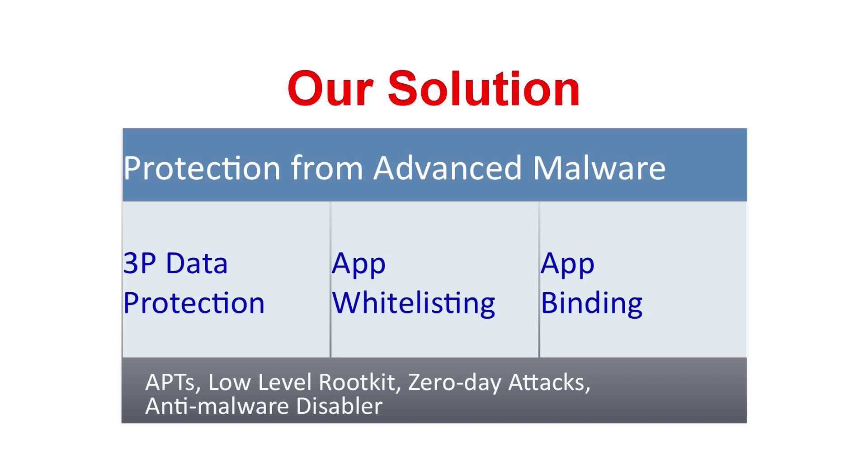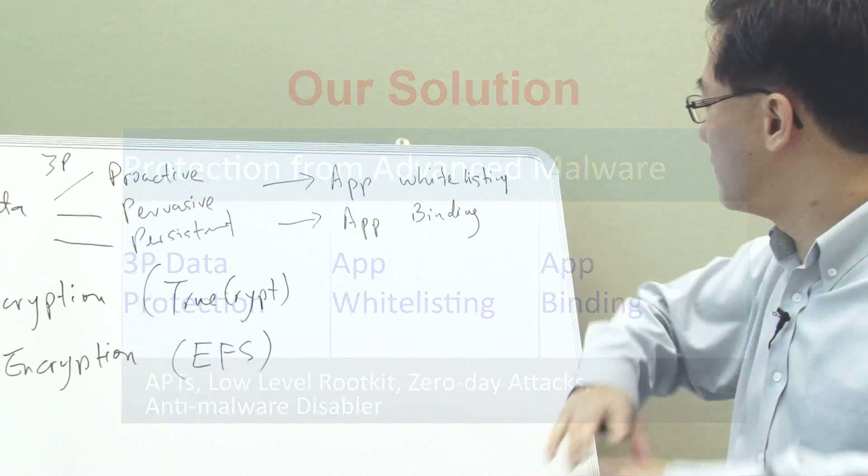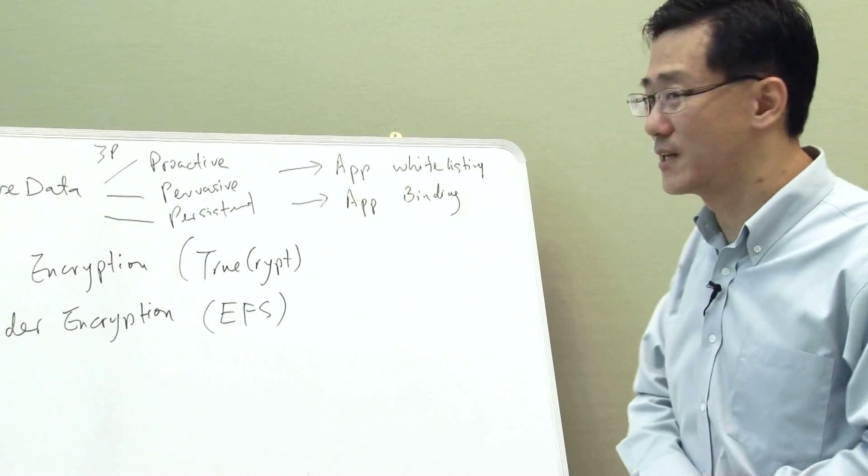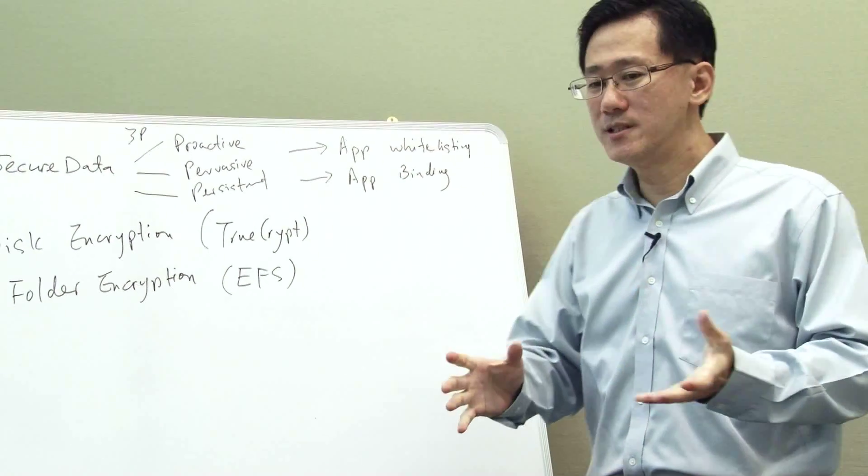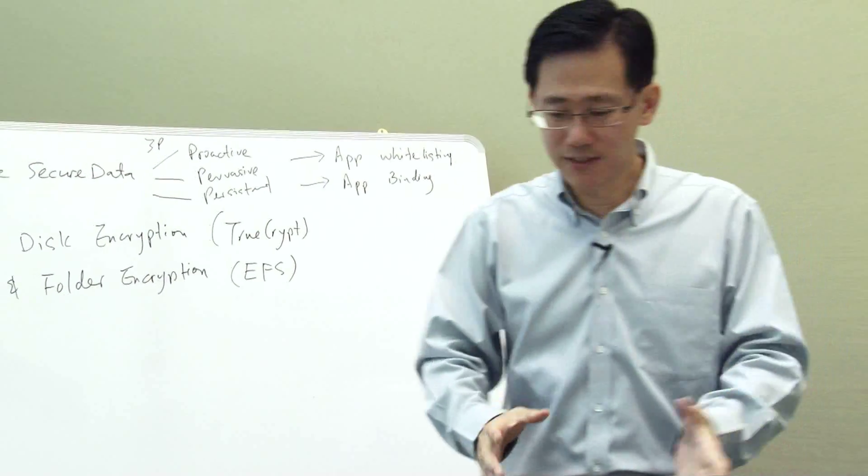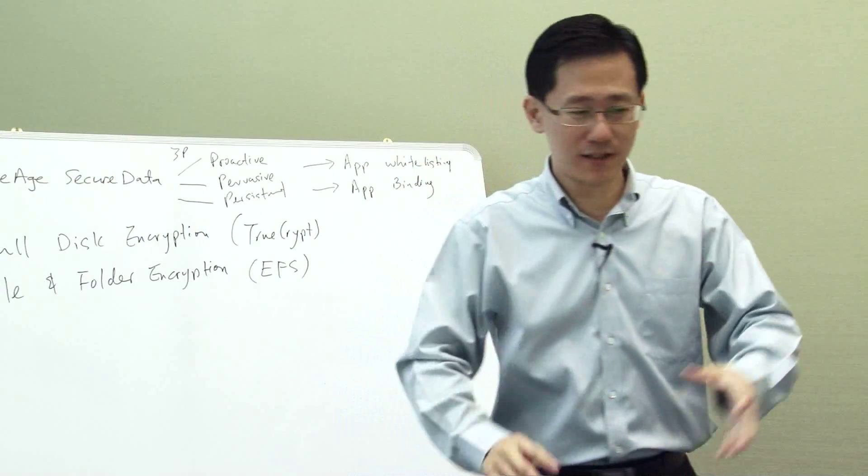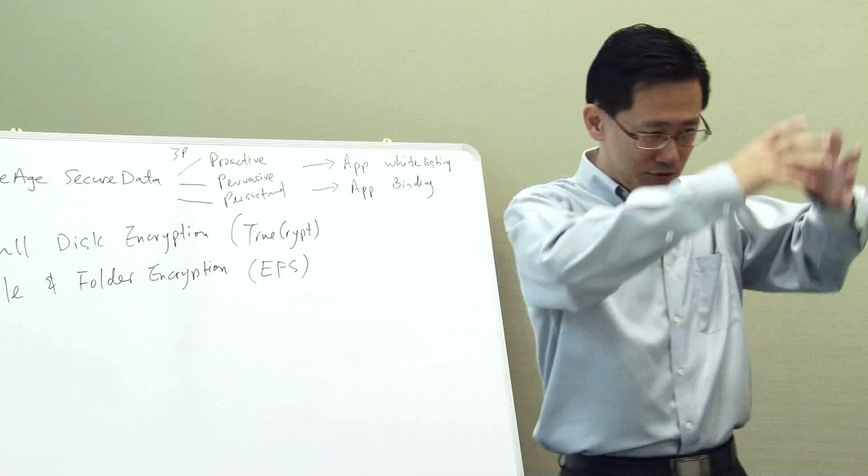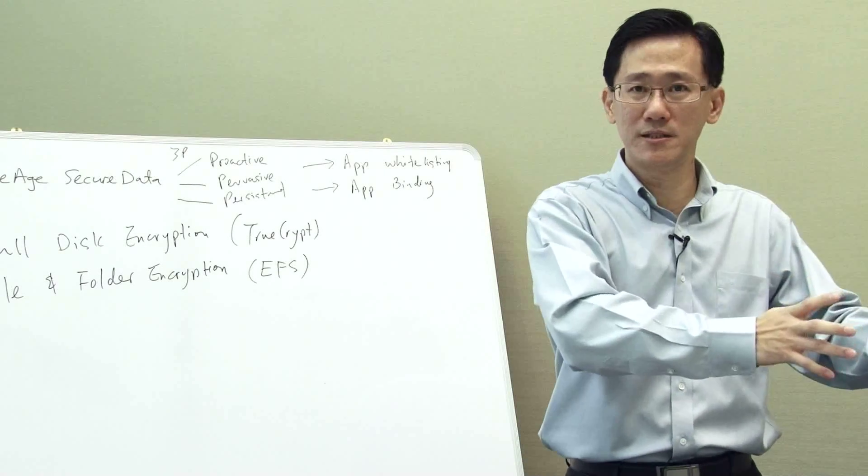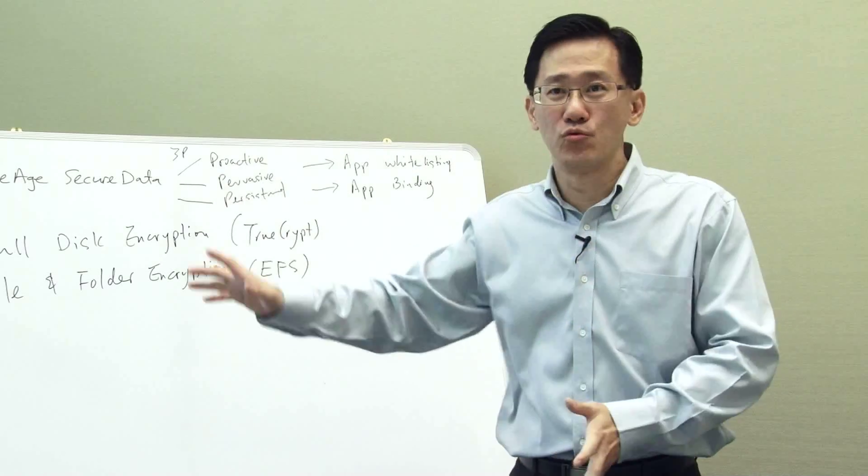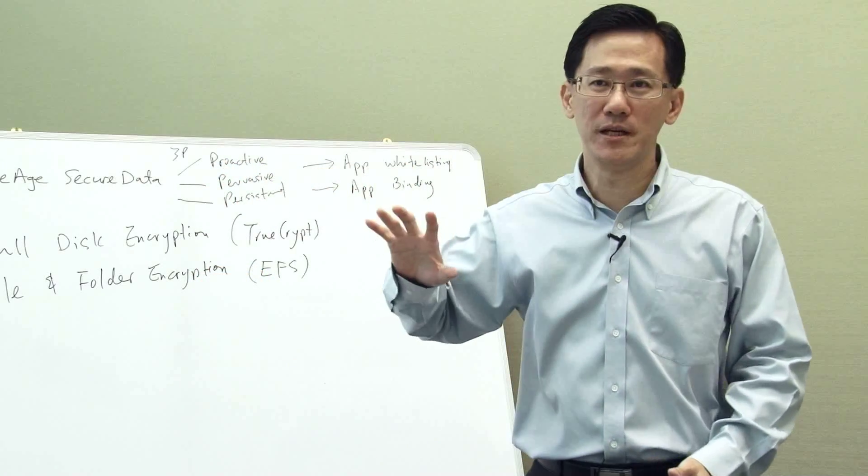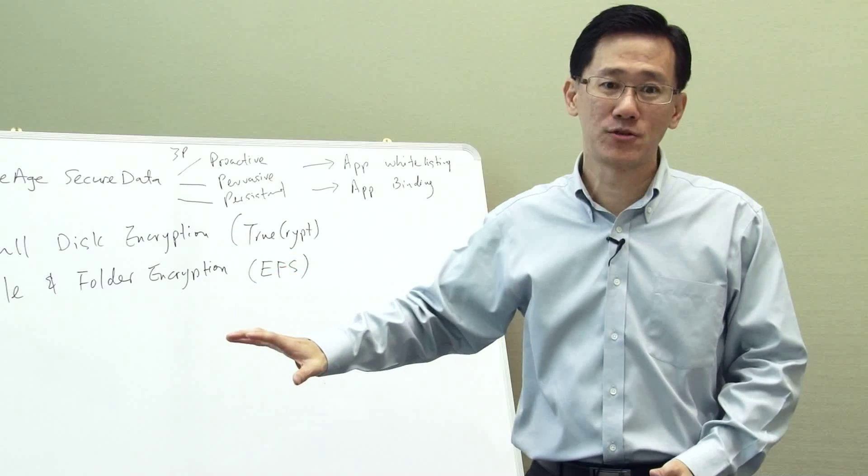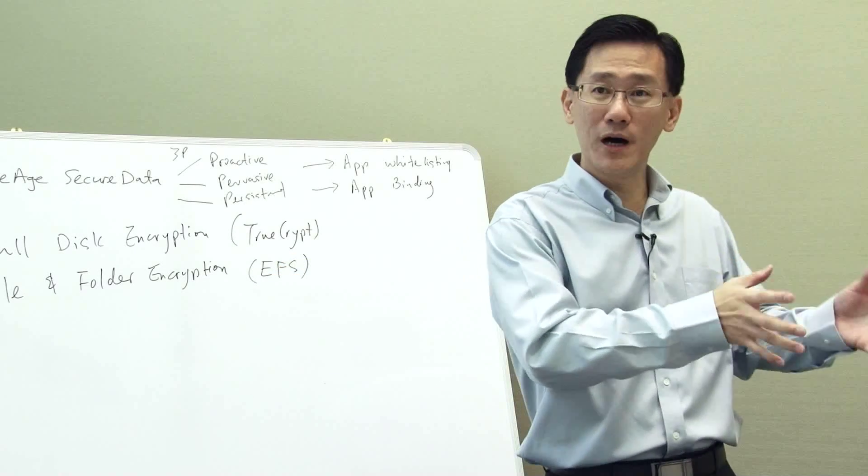The first one is called application whitelisting, and the second one is called application binding. Application whitelisting is a relatively well-known technology now, especially after all the advanced malware that's appeared over the last few years. Essentially it says that instead of like antivirus that says these are all the bad guys that cannot run, the good guys, the rest can run, application whitelisting basically says these are the trusted good guys, they can run in my system. Anything that I don't know, including all the malware, will not be able to run in my system. So I just need to concentrate on what are the good guys.